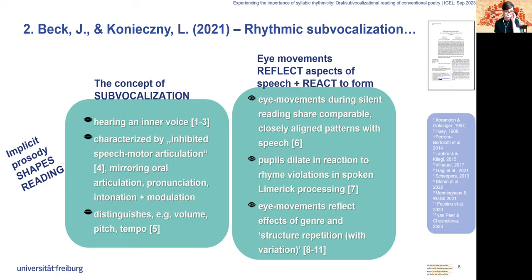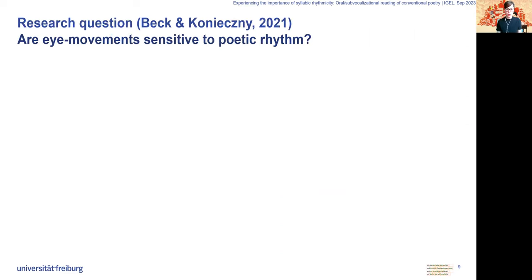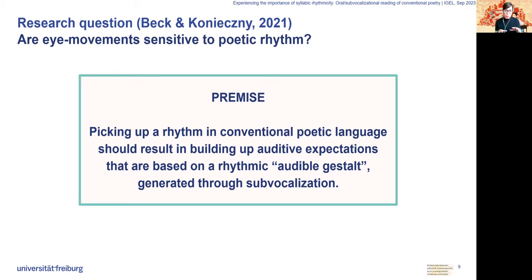However, research using eye tracking and focusing on rhythmic sub-vocalization in silent reading of metrically regularized rhyme language and how it depends on a clear visual presentation as poetry was still rare when we conducted this experiment. Picking up a rhythm in conventional poetry should result in building up auditive expectations based on a rhythmic audible gestalt generated through sub-vocalization.